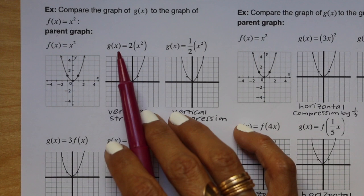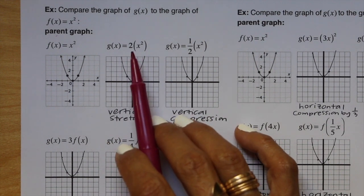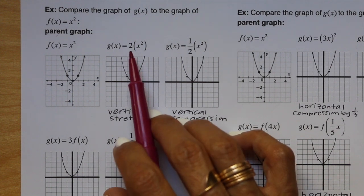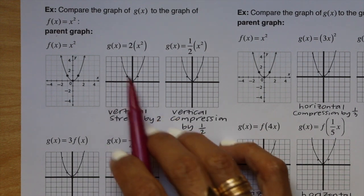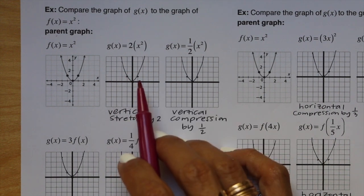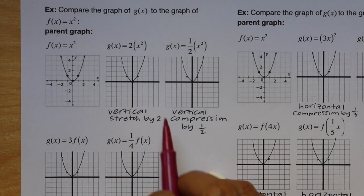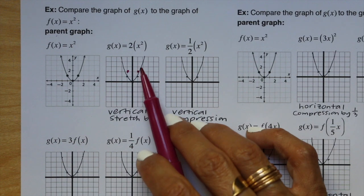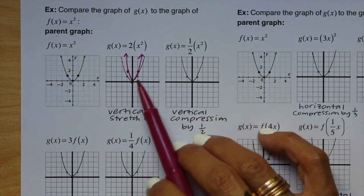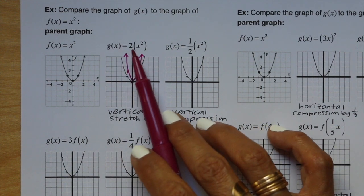This example says compare the graph of g to the graph of f of x equals x squared. The first equation is g of x equals 2 times x squared. When you have a number in front, it's going to be either a vertical stretch or compression. In this case with the number 2, we have a vertical stretch by a factor of 2. Instead of going up 1, we go up 1 times 2 — up 2 — for the points on both sides of the parent graph.